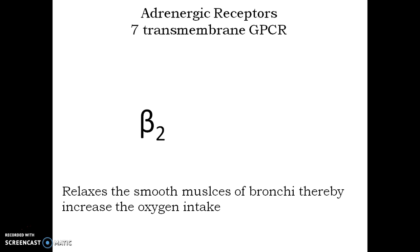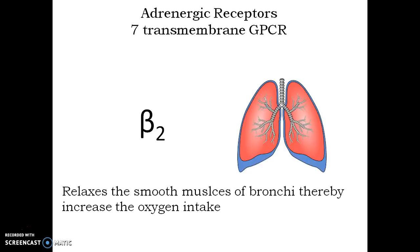Beta-2 receptors, they are present in the cell membrane of smooth muscles that make up the bronchi. Activation of beta-2 relaxes the smooth muscles and thereby increase the oxygen intake.